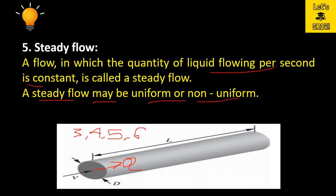A steady flow may be uniform or non-uniform. If the cross-sectional area of the pipe is constant and the discharge is constant, then the velocity and depth of flow will also be constant — this is steady uniform flow. However, if the cross-section of the pipe is varying, the same discharge passes (so the flow is steady), but velocity and depth of flow change accordingly, making it a steady non-uniform flow.